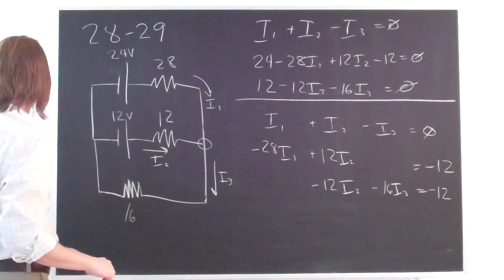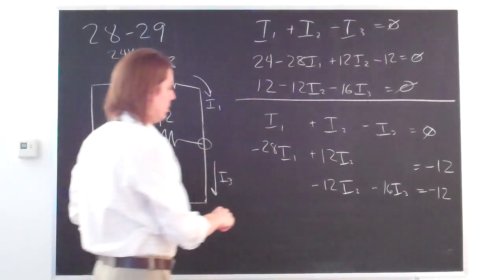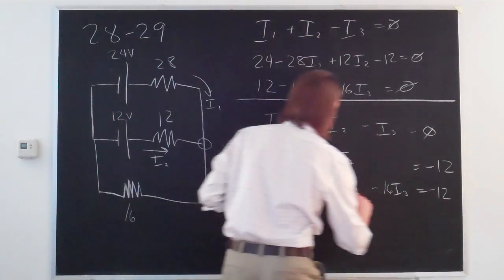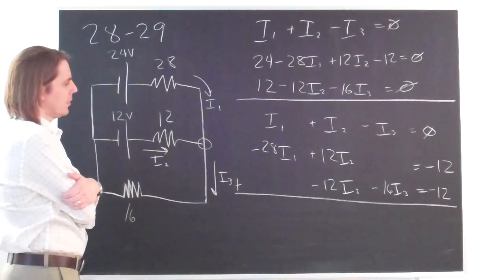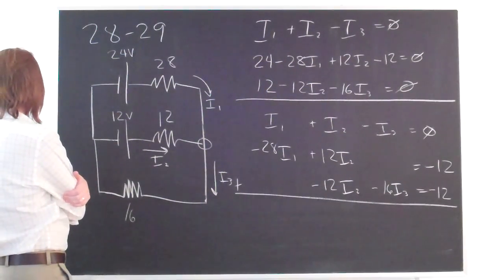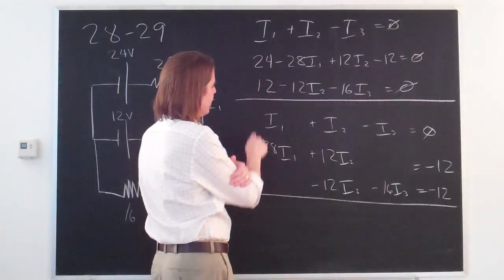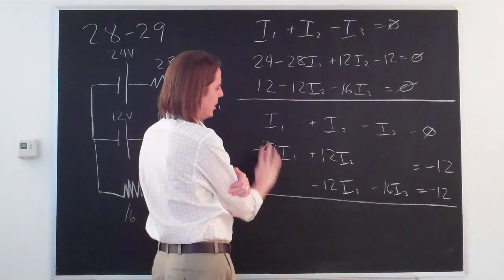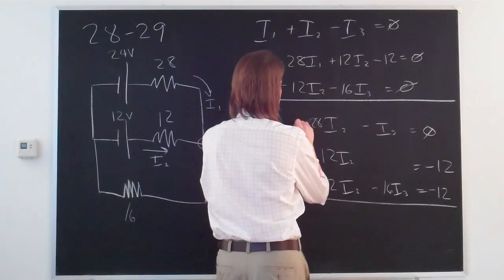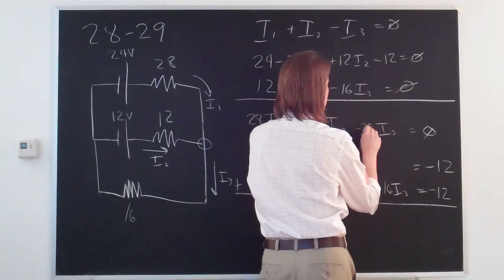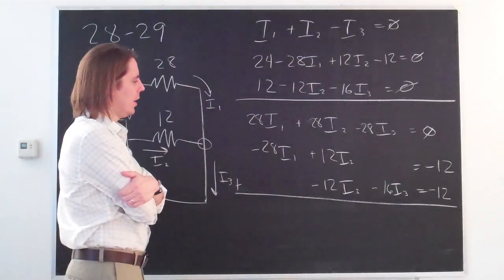So if we just go adding those up, it won't be the right thing. But we can manipulate it before we add them. For example, the first thing we would want to do is multiply the first equation by 28. As you can see, if we multiply this by 28, then it'll cancel that and we'll have gotten rid of I1. So we multiply that by 28, we multiply that by 28, and we multiply that by 28. And since it's an equation, we multiply both sides by 28. We multiply zero by 28 and we still get zero. Okay, so now if we add these two, I1 is now zero. So we've removed it from the equation.